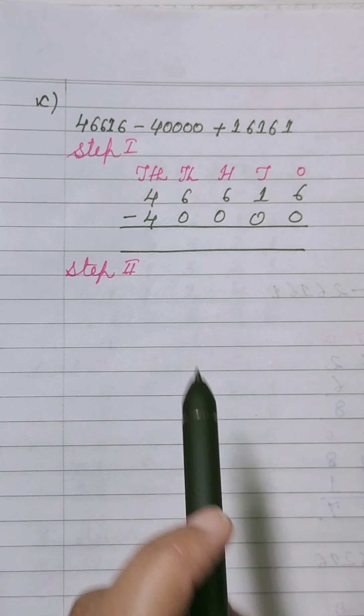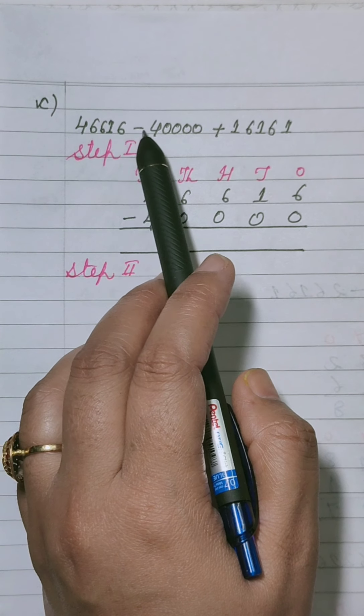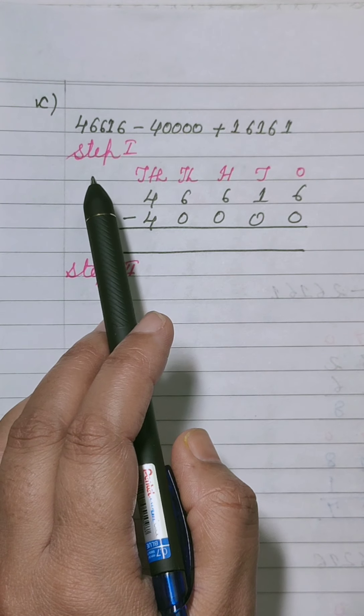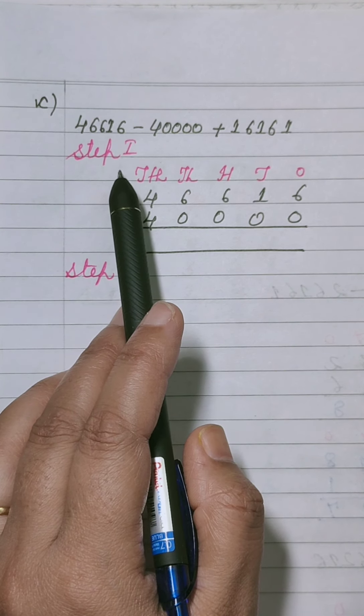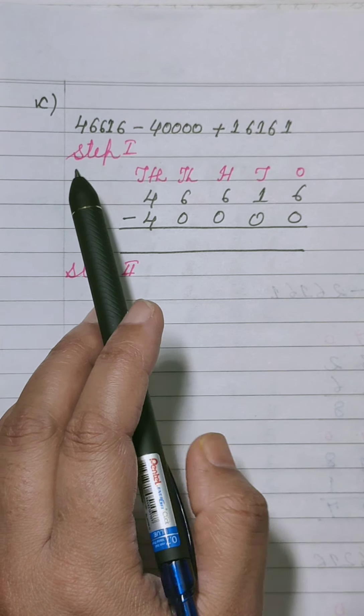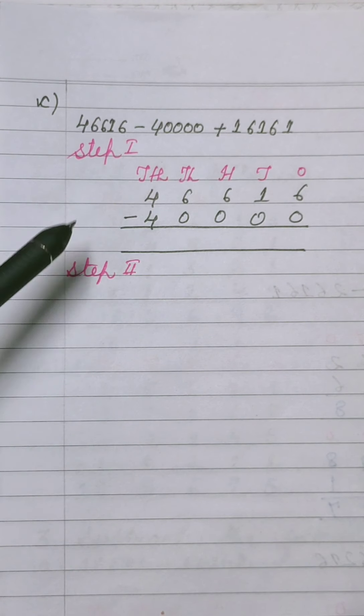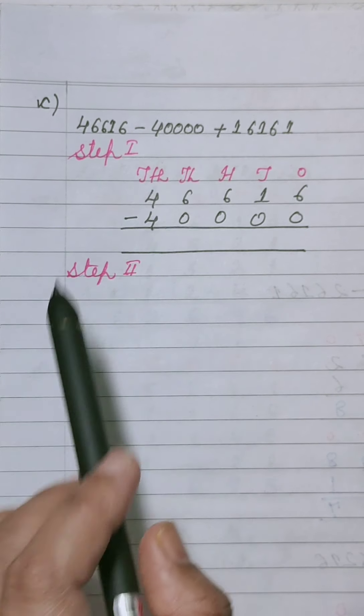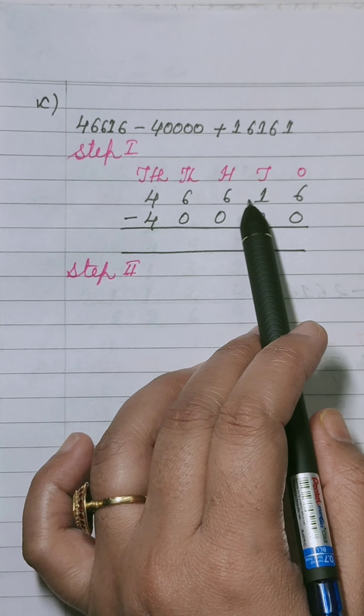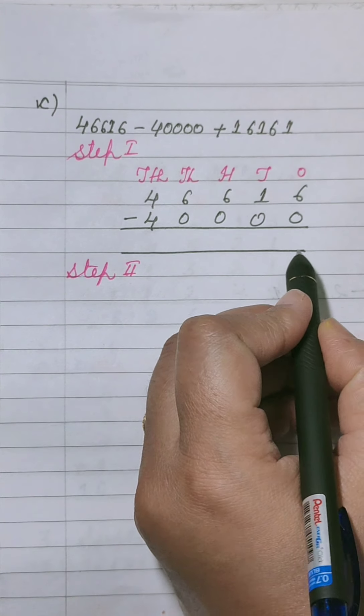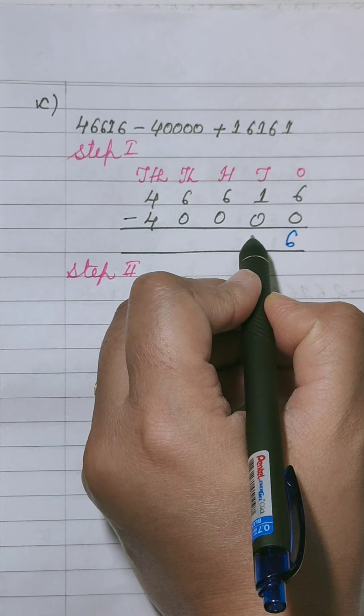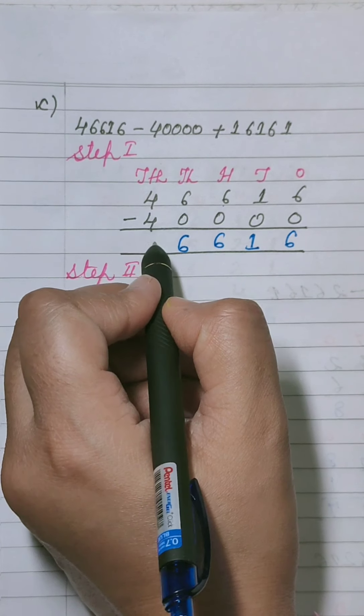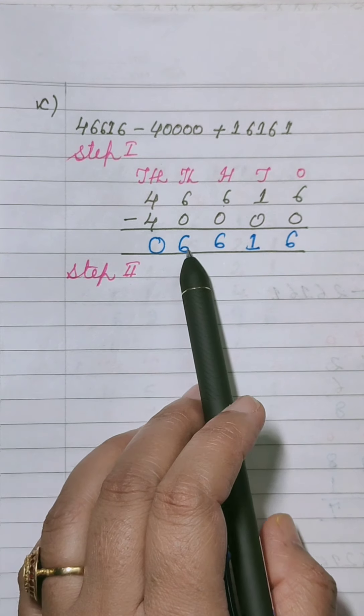Now part number C: 46,616 minus 40,000 plus 16,161. Step 1 is, I am going to solve this sum by using second method. 6 minus 0 is 6, 6 minus 0 again is 6, 4 minus 4 is 0. So answer is 6616.